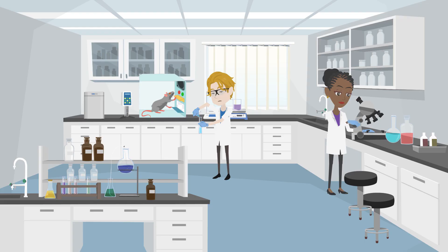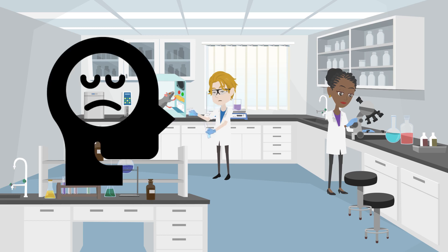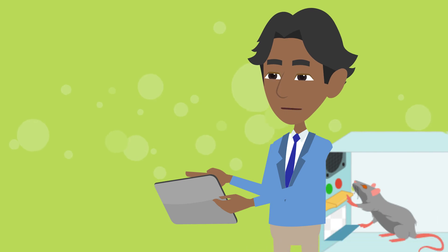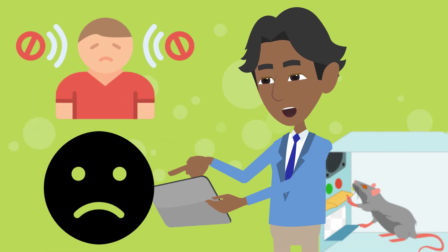In some of Skinner's experiments, pressing the lever would result in an unpleasant event, such as a mild electric shock. In these cases, the negative consequence would discourage the animal from pressing the lever again.